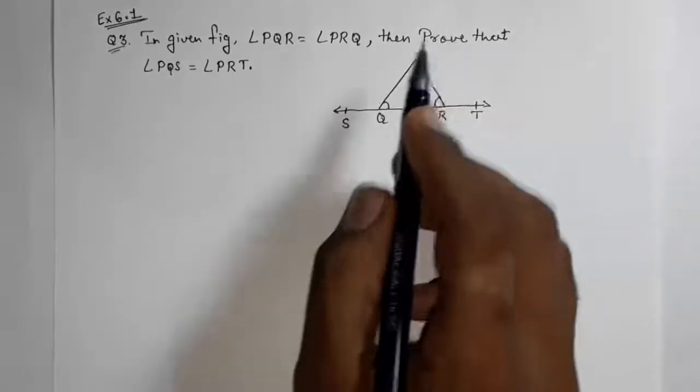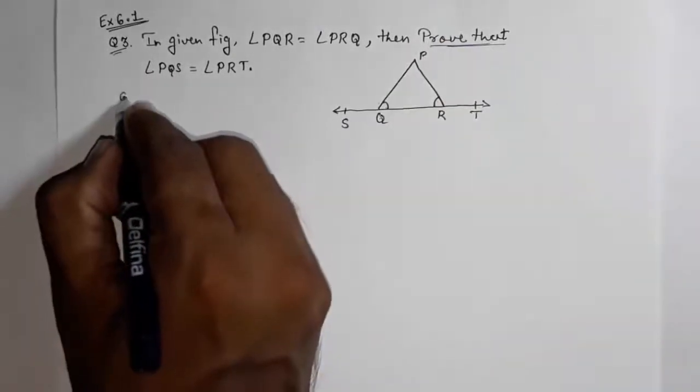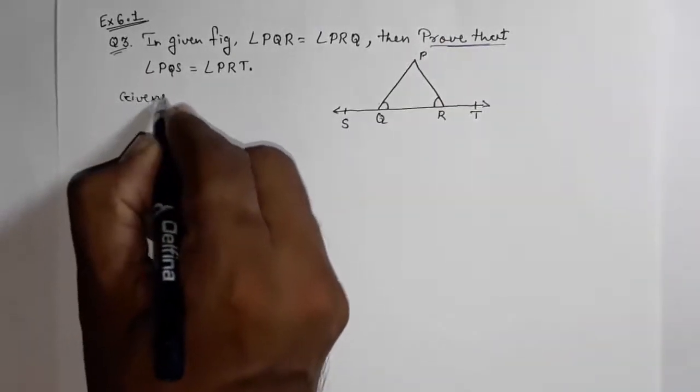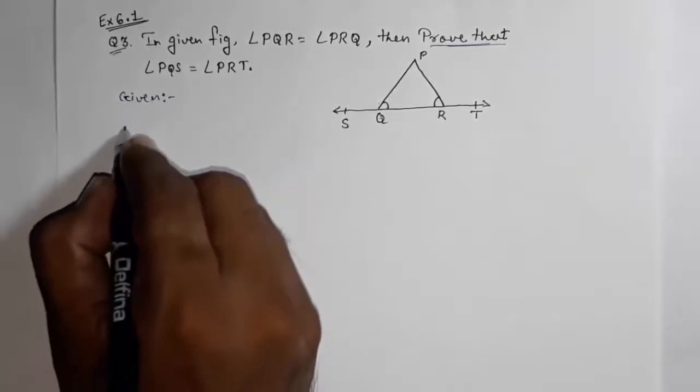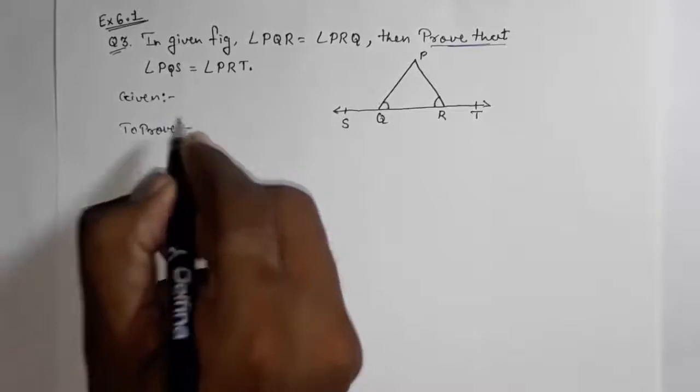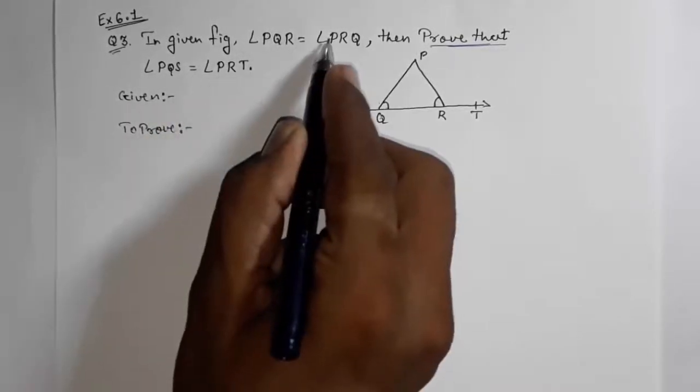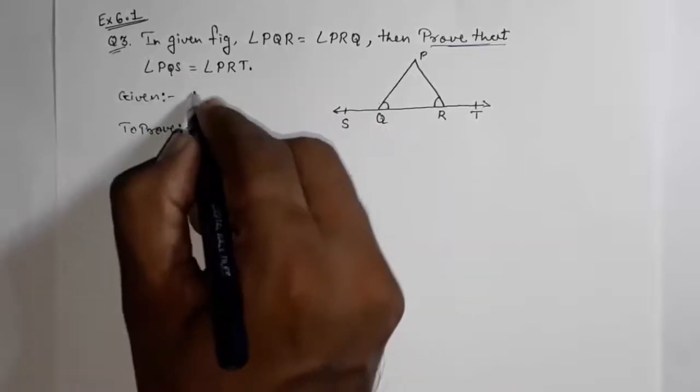Whenever 'prove that' type of problems are there, what you have to do first is write down 'Given,' then 'To Prove.' These are the two basic things you have to keep in mind, because from 'Given' only we come to know what we have to do. Our first step will be from 'Given' only.